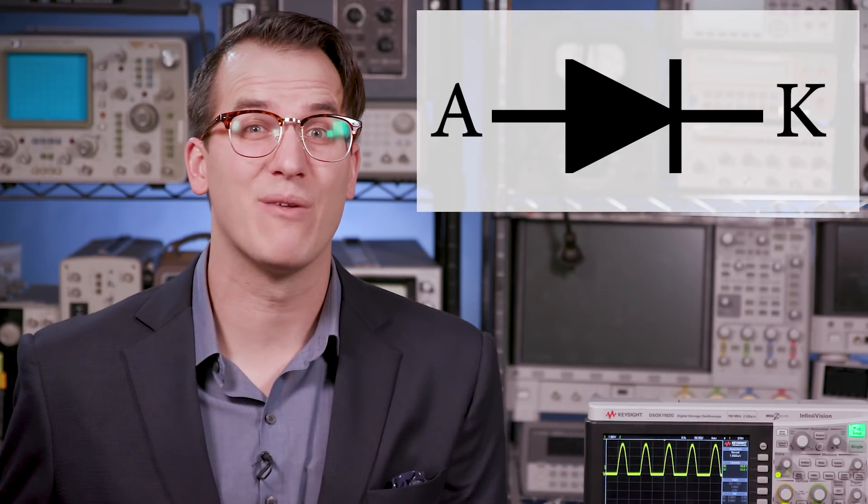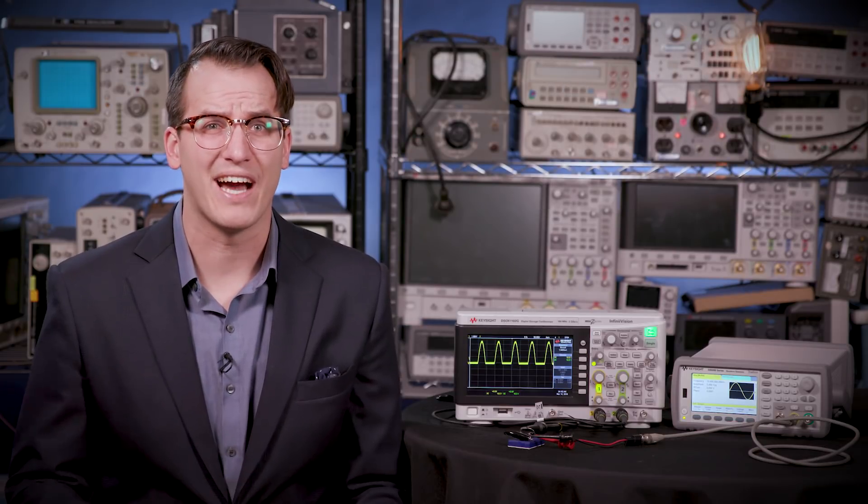When operating normally, an ideal diode only conducts current in one direction. They're conceptually quite simple, but are extremely useful because of their VI curve, which looks like this. The x-axis is voltage, and the y-axis tells us how much current can flow through the device when exposed to that level of voltage.